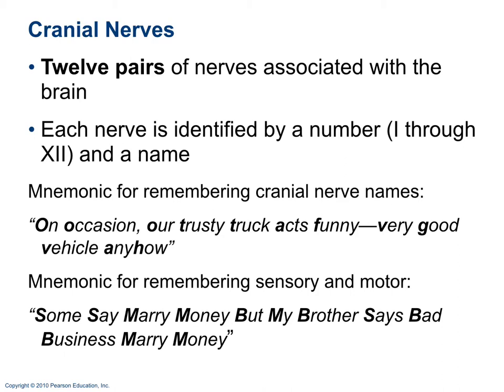There are 12 pairs of cranial nerves, numbered with Roman numerals 1 through 12. A mnemonic from the textbook is: 'On Occasion, Our Rusty Truck Acts Funny Very Good Vehicle Anyhow.' You take the first letter of each word to recall the first letter of each cranial nerve name.